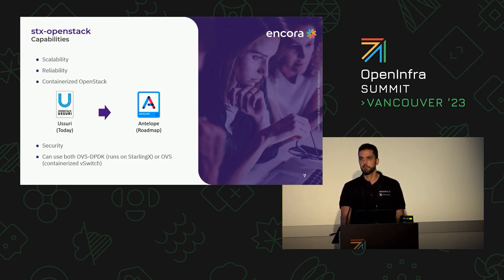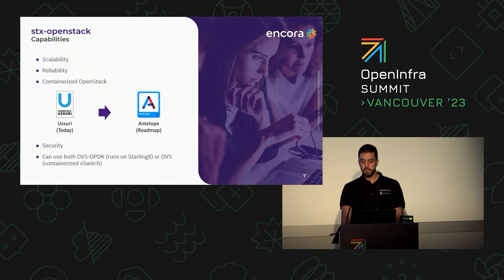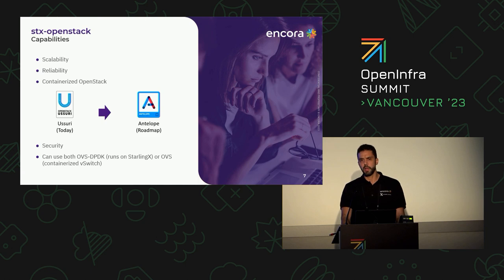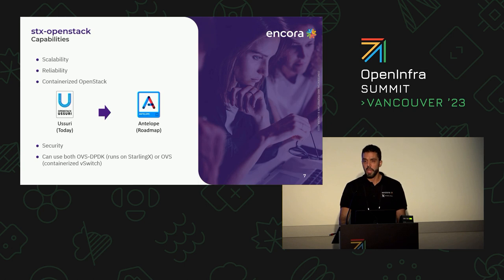We have the flexibility to configure STX OpenStack to utilize either the OVS-DPDK vSwitch, which is integrated into the StarlingX platform, or OVS, which is our own containerized vSwitch solution. By leveraging STX OpenStack, organizations can easily migrate their workloads from virtual machines to containers while benefiting from a range of powerful cloud computing features and capabilities.